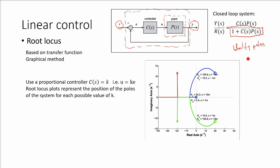Then, if we define c, our controller, as some transfer function of a tuning variable, we can sweep the tuning variable to find what value it should have in order for the closed-loop system to have the poles located in the place we want. Let's use a proportional controller c(s) equals k to create a root locus plot.